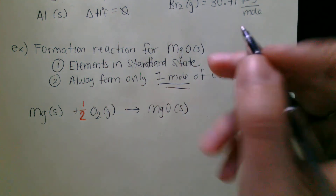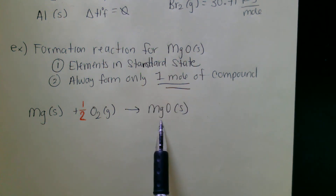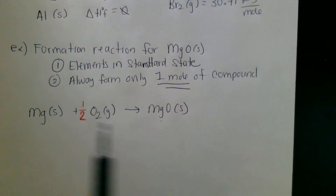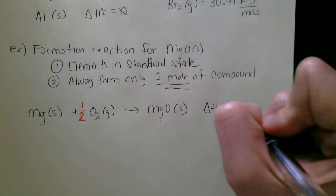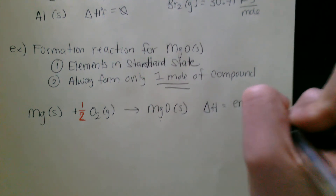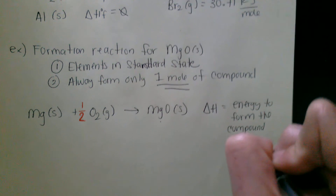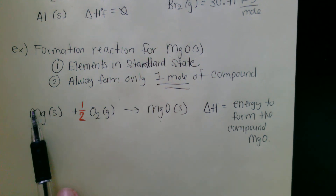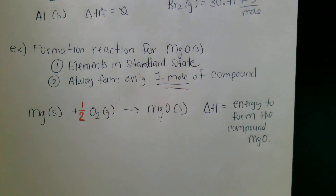If we measure the energy from this process, this energy would be the energy needed to form this compound. From our building block baseline pieces, the delta H we would measure equals the energy to form the compound magnesium oxide. These elements are essentially at zero, so any energy that comes out of this process has to be the energy of this compound.